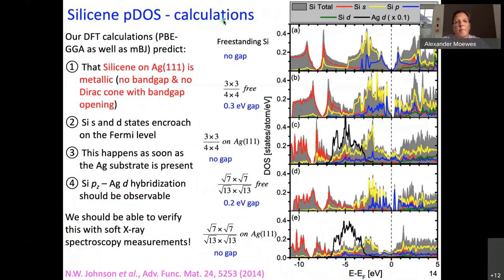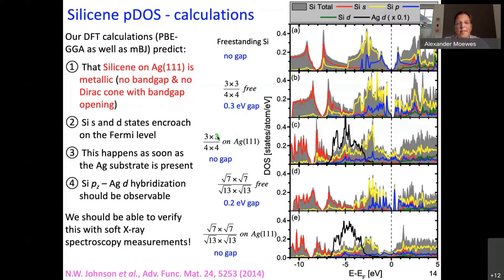Let's look first at our calculations before comparing to measurements. When you have freestanding silicene — only possible on the computer — you don't have a gap. When you look at freestanding silicene in the 3×3 over 4×4 silver structure but with the substrate removed — also an artificial structure only produced on the computer — you have a small gap introduced. But as soon as you introduce the silver substrate for 3×3 on 4×4 on silver, there is no gap. The same thing happens for the other structure: without the substrate there is a gap, but on silver there is no gap. As soon as you bring silicene on silver, the gap in the calculation disappears.